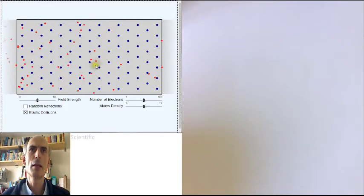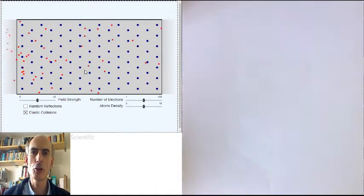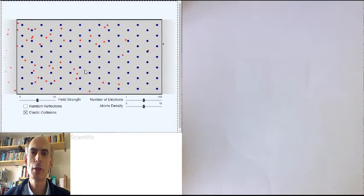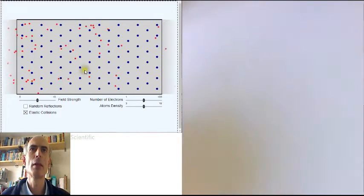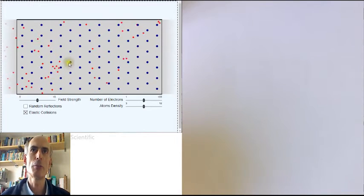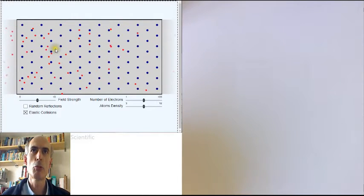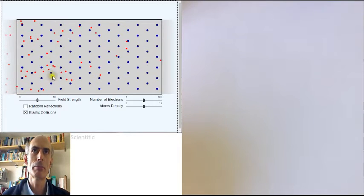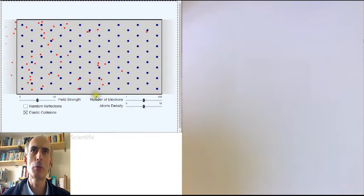Now this animation isn't implementing the model that Paul Drude proposed in two important respects. The first one is that this model is currently treating the atoms a bit like balls of rubber. So if an electron bumps into an atom, it will bounce off in the direction that it arrived at, as if it was hitting a rubber obstacle.